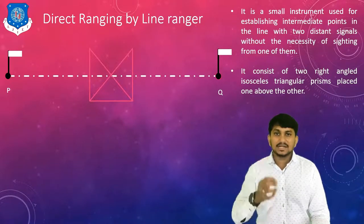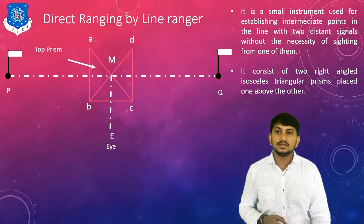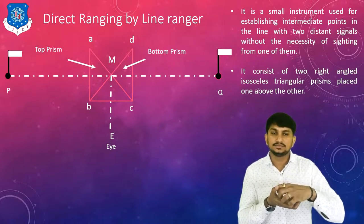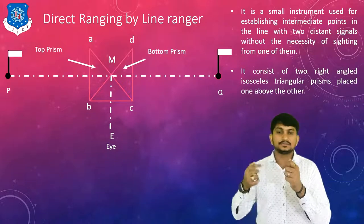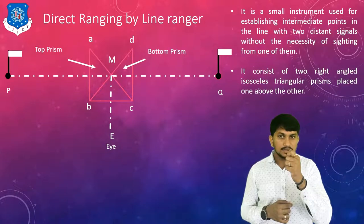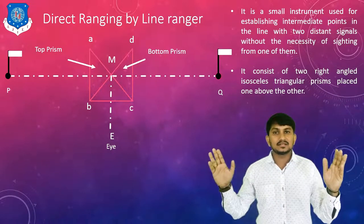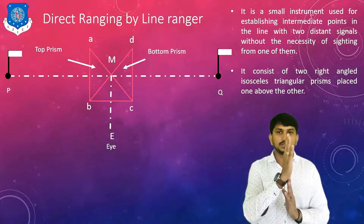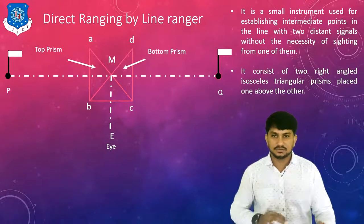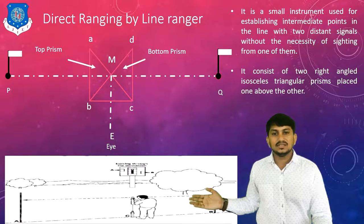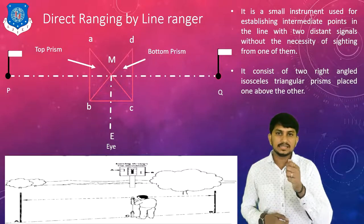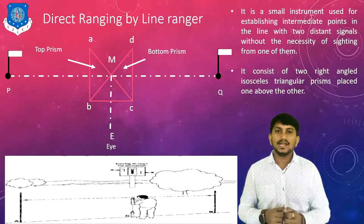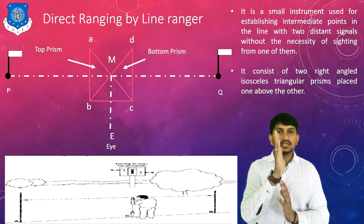In the structure of the line ranger, there are two prisms — a top prism and a bottom prism — placed one above the other at right angles. We have to stand on the survey line and look through both prisms simultaneously to see end stations P and Q and their ranging rods. When the images of the ranging rods of end stations P and Q are exactly one above the other, it is called perfect ranging.